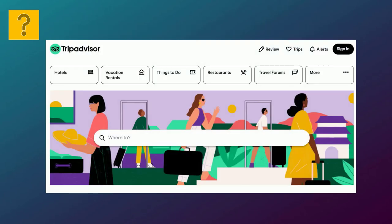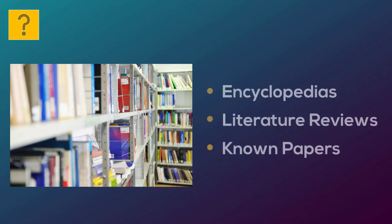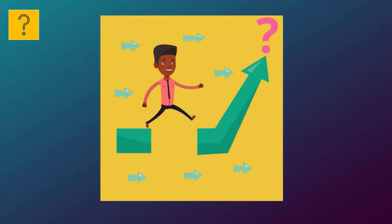Similar to taking a look at TripAdvisor, conducting background research involves consulting reliable sources like encyclopedias, literature reviews, and known papers to show us what questions have been asked and what gaps exist in our area of study.